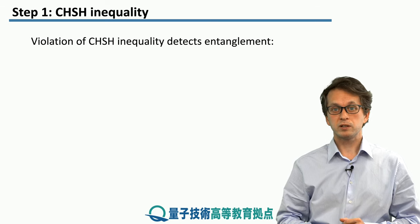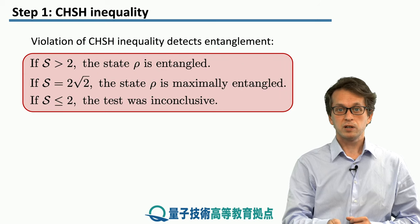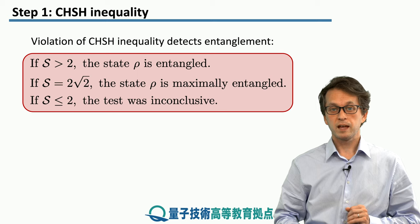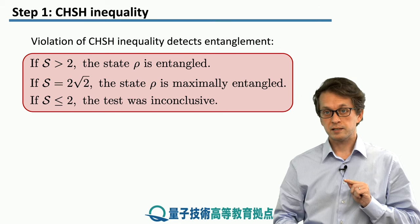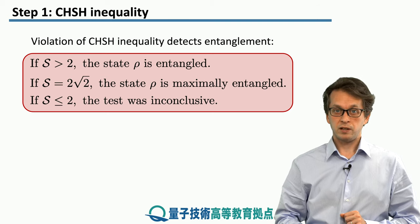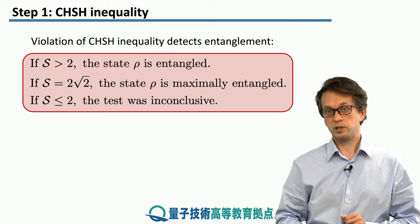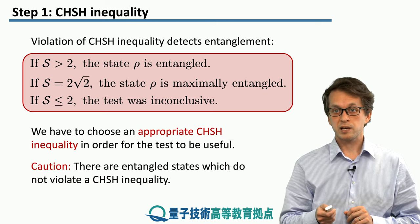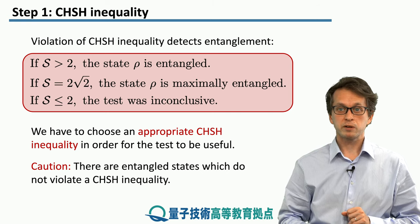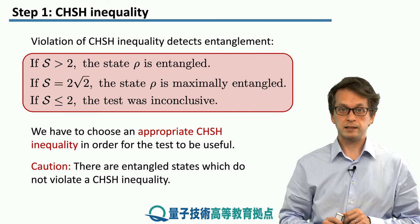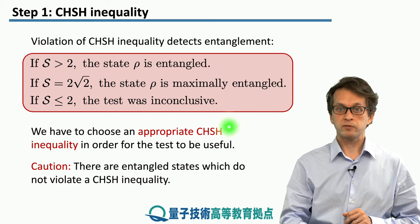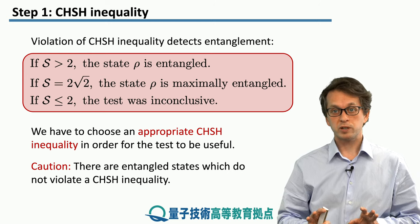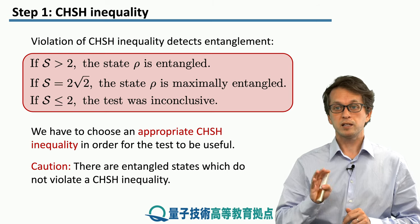So we saw that the CHSH inequality can detect bipartite entanglement. If we go through the CHSH test and obtain S larger than 2, then we have an entangled state rho. If S equals 2 root 2, then the state Alice and Bob are sharing is maximally entangled. If S is less than or equal to 2, the test is inconclusive — note that this does not mean the state is separable, because there are some entangled states which do not violate this inequality. However, if we find a violation, we can automatically conclude the state is entangled. We also have to be mindful of which CHSH expression we are using — make sure it's the correct combination of those four expectation values with the right plus or minus signs, depending on which state you are trying to test: phi-plus, phi-minus, psi-plus, or psi-minus.